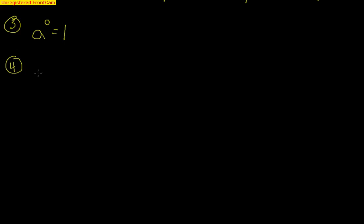Number 4 here, we have a times b in parentheses with an exponent outside the parentheses. Basically, that exponent goes to both of those. That means we have ma's and mb's, just like that.